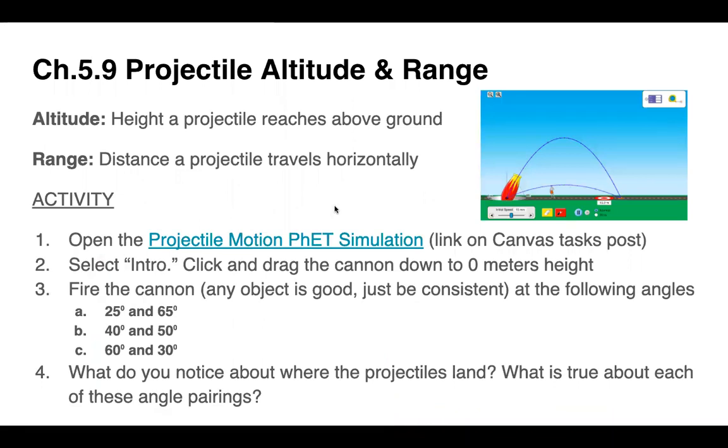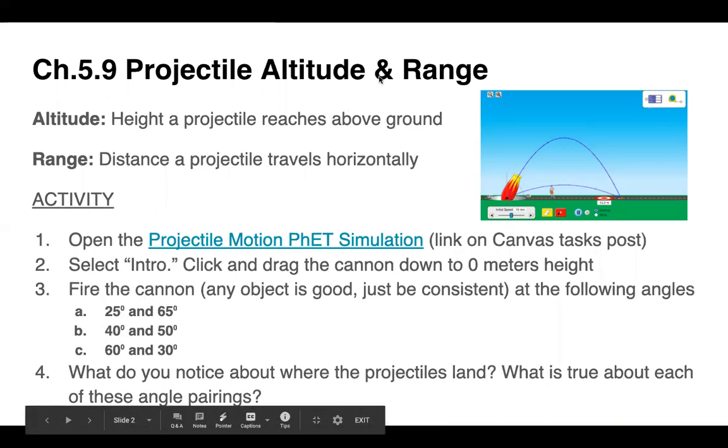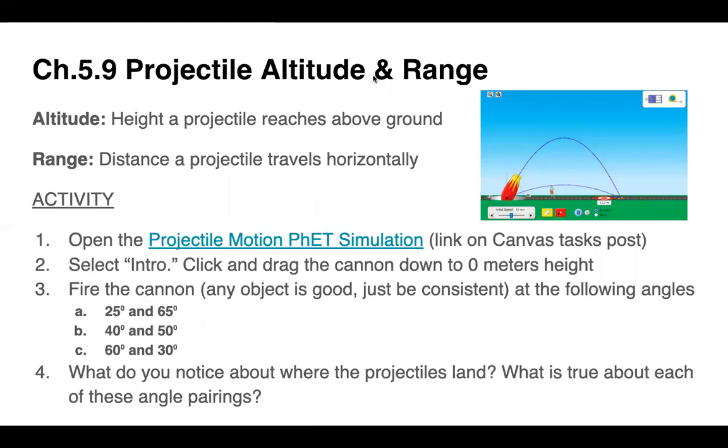So the first part of the activity that you had to do, you had to fire a projectile at different angles. 25 and 65, 40 and 50, 60 and 30. What did you notice when you fired projectiles at those two angle pairs? They landed in the same spot. Yep. And so, what's the pattern? Did anyone find the relationship between 25 and 65, 40 and 50, 60 and 30? Did they add to 90? Yes. So for all of those, if you add the two numbers together, you get 90 degrees. And I didn't know that. It's kind of cool. If you fired any two angles, if they add up to 90, the projectile will land in the same spot.